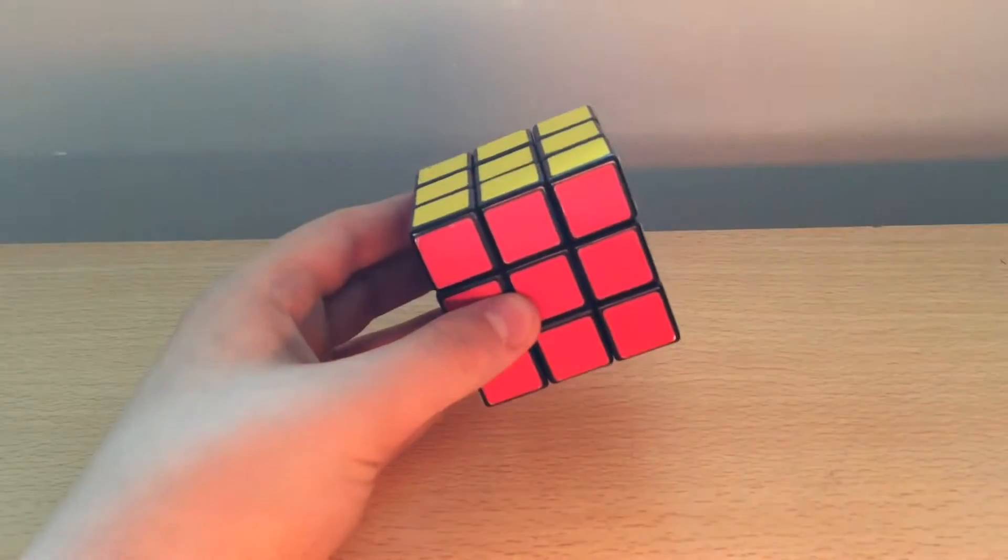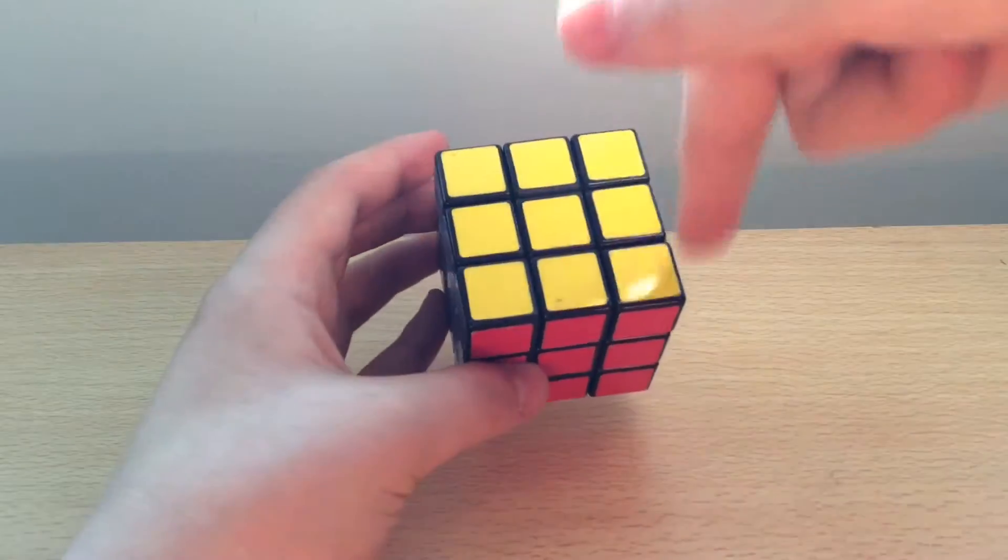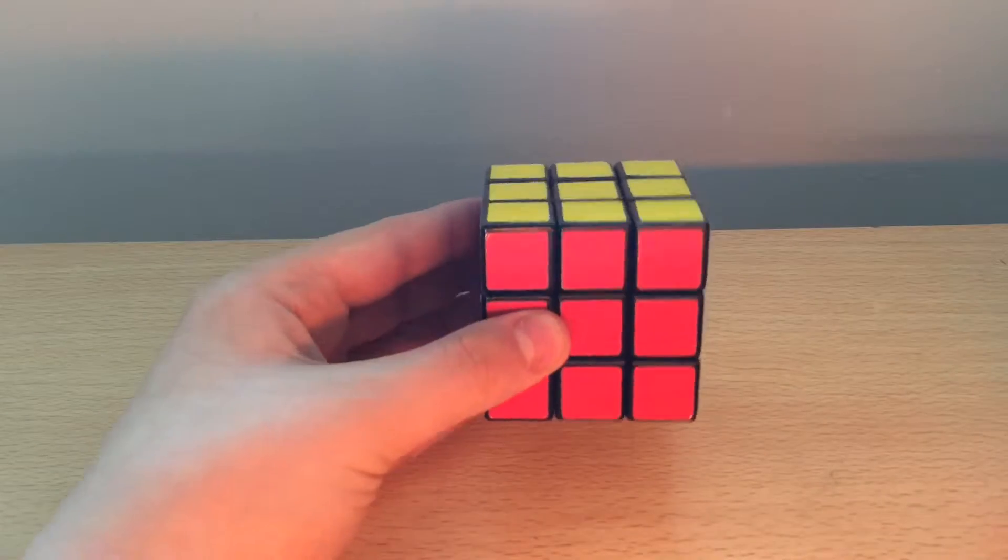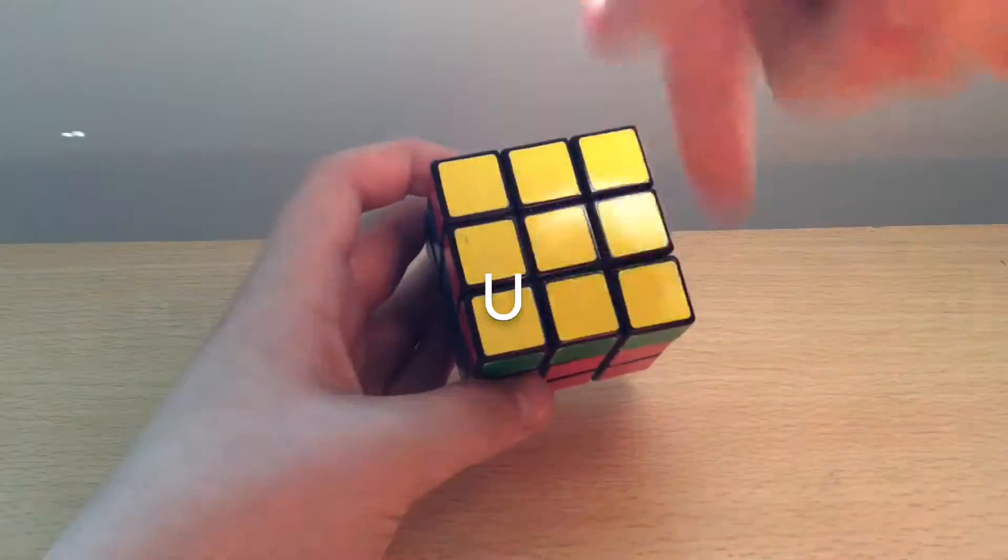When we say each move, if it's just one of that move, then it represents that particular face as you were looking at it going clockwise. So for example, this is the up face, so the move U would be the up face moved clockwise.